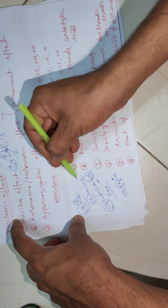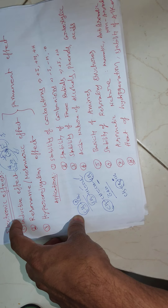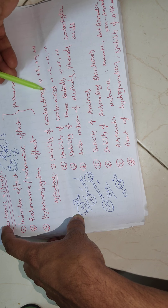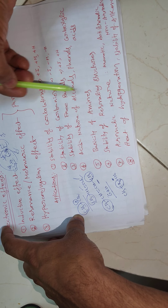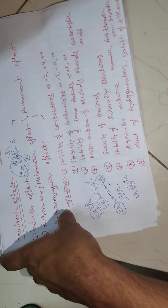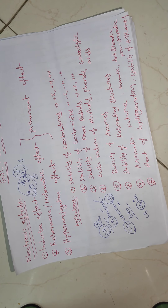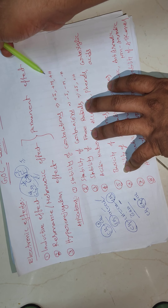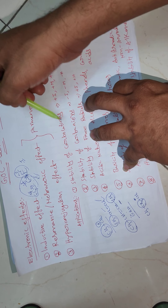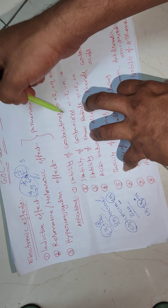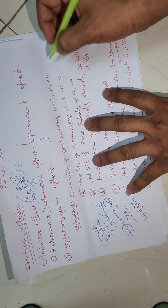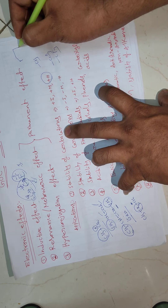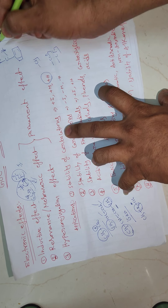Another application of hyperconjugation is explaining heat of hydrogenation: less stable alkenes have higher heat of hydrogenation. Using all these electronic effects — inductive, resonance, and hyperconjugation — we can explain the stability of carbocations, carbanions, free radicals, acidic nature, basicity, stability of resonating structures, aromatic nature, and different other applications. Carbocations are electron deficient and are stabilized by electron-donating plus-I, plus-M, and plus-H groups.